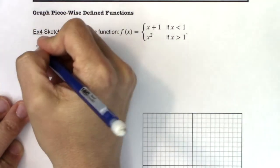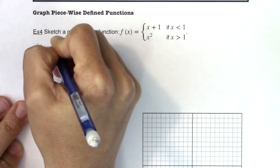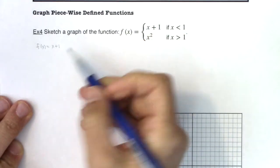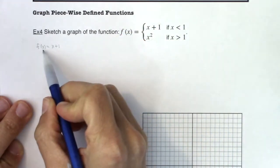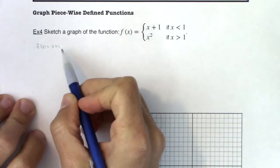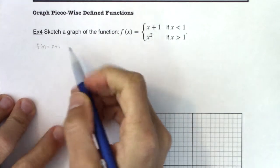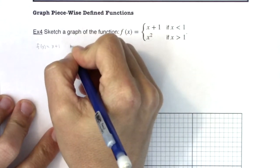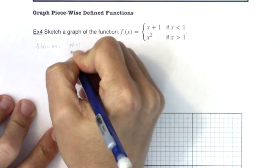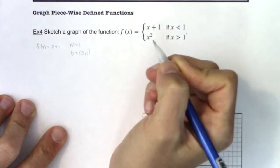So let's say I was going to graph the function f(x) equaling x plus 1. If I'm looking at f(x) equaling x plus 1, this is the equation of a line — it's of the form mx plus b. In this case, I know my slope is 1 and my y-intercept is 0, 1.